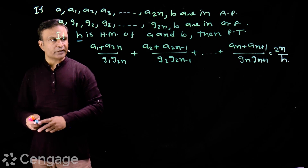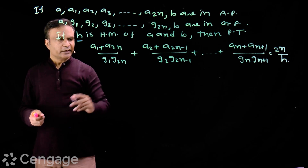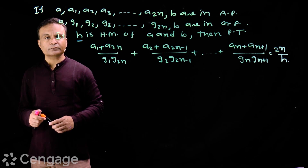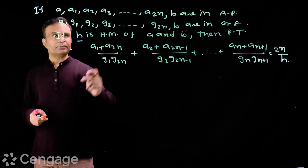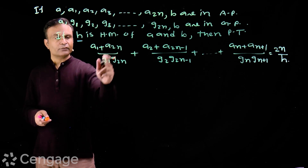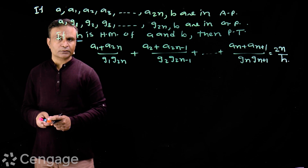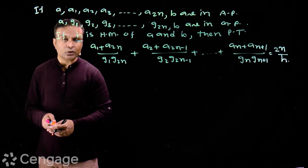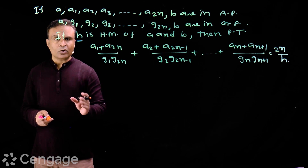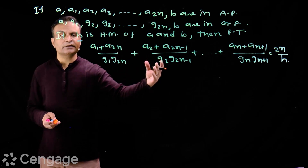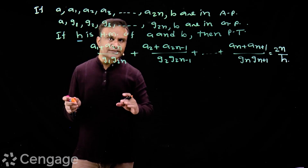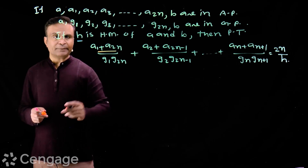h is the harmonic mean of a and b. Look at the terms carefully — what do you get for a1 plus a2n? Its value is equal to a plus b. We have done this in properties of AP: the sum of the rth term from the start and the rth term from the end is constant, equal to the sum of the first term and the last term. So this is a plus b.